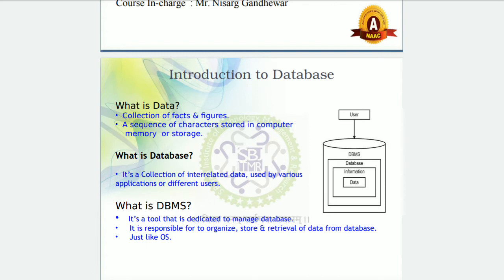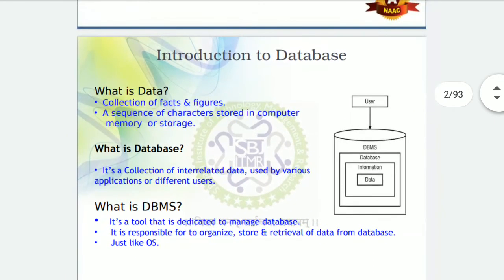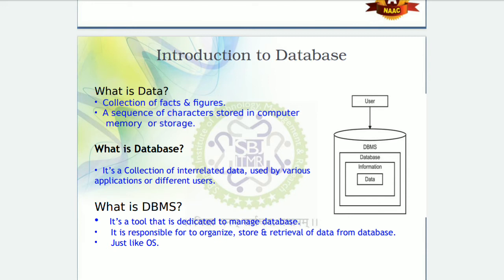Now we will start from the very basics: what is data, what is information, what is a database, and what is DBMS. Here you can see a simple diagram. Data is an integral part of this system — first there is data, then on top of that there is information, then a database, then DBMS, and at the very top is the user. So very first: data is nothing but a collection of facts and figures.